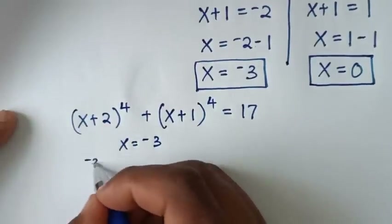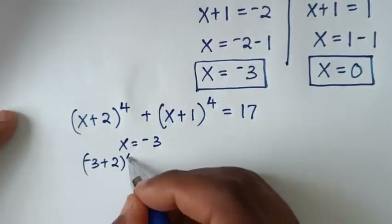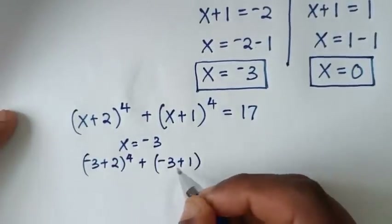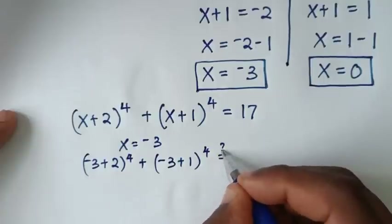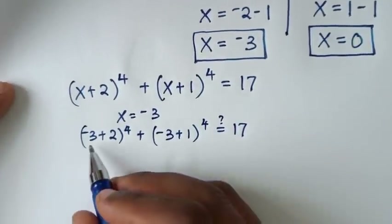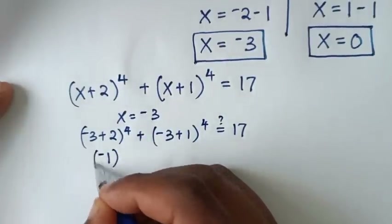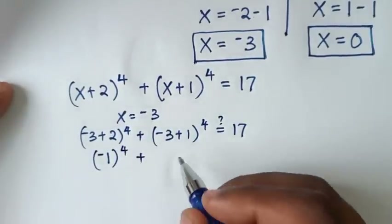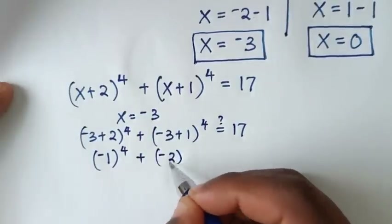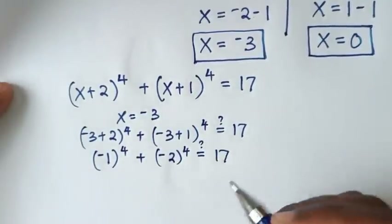It will be (-3+2)⁴ + (-3+1)⁴ = 17. So -3+2 = -1, giving (-1)⁴, plus -3+1 = -2, giving (-2)⁴. Is this equal to 17?